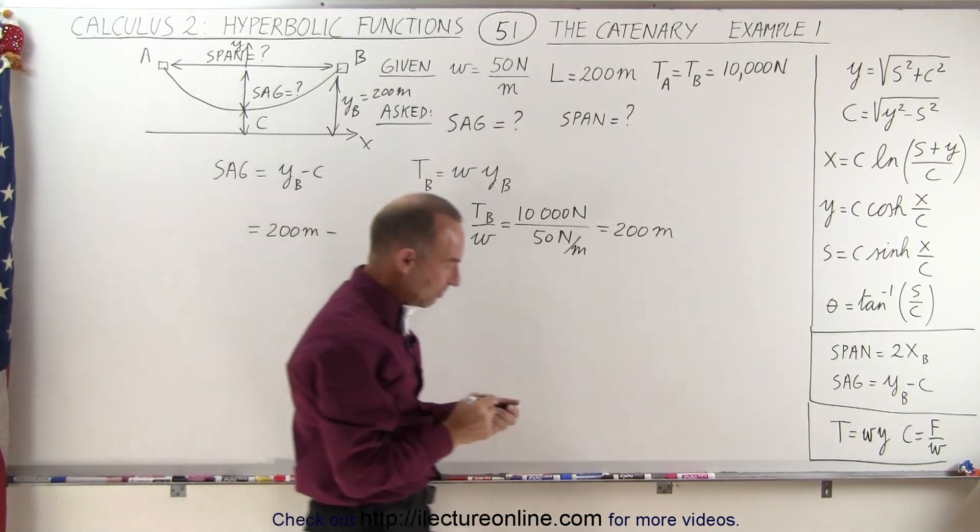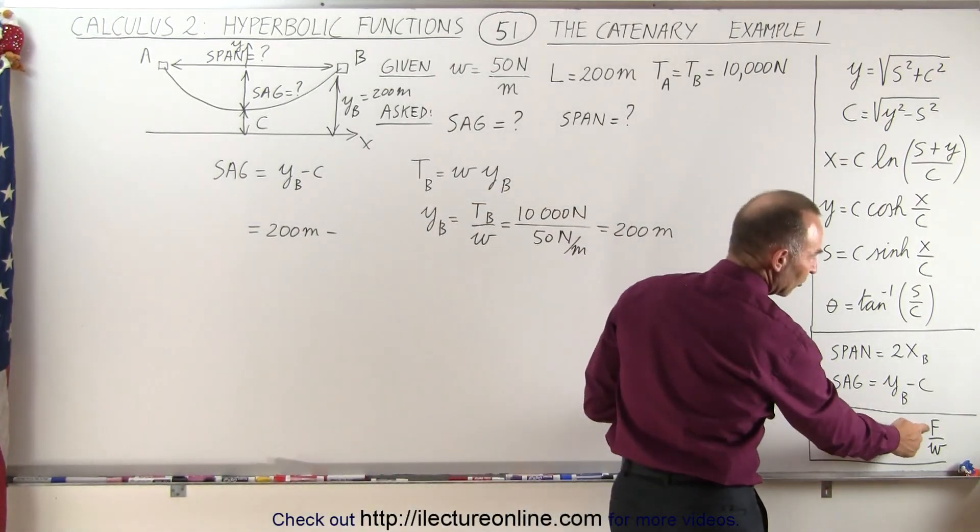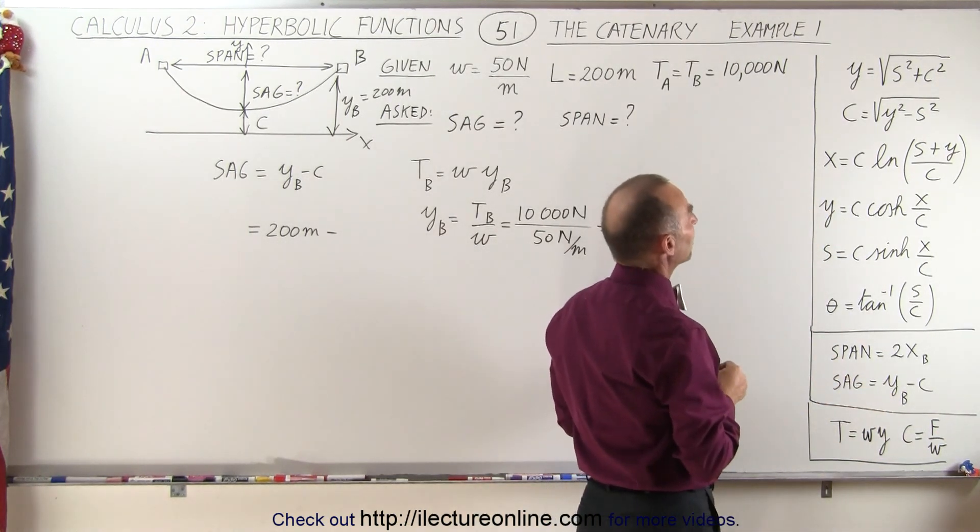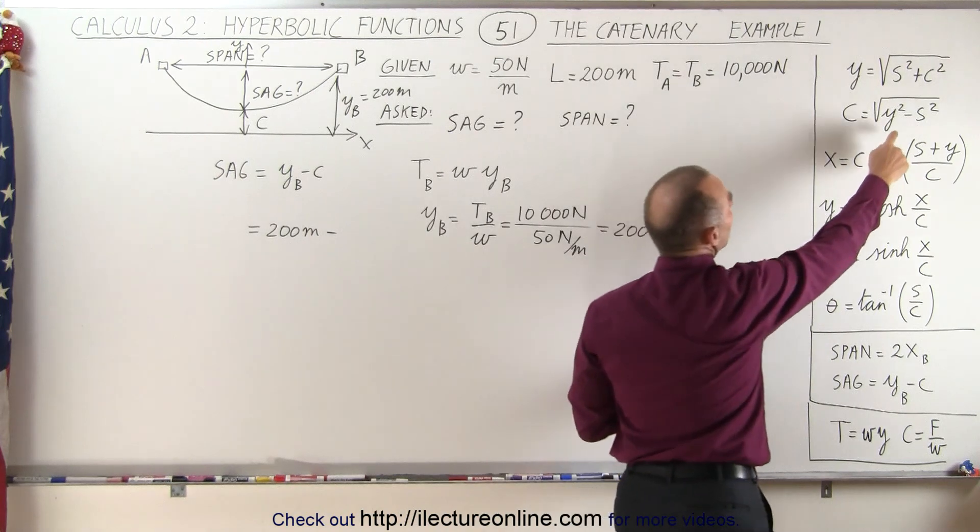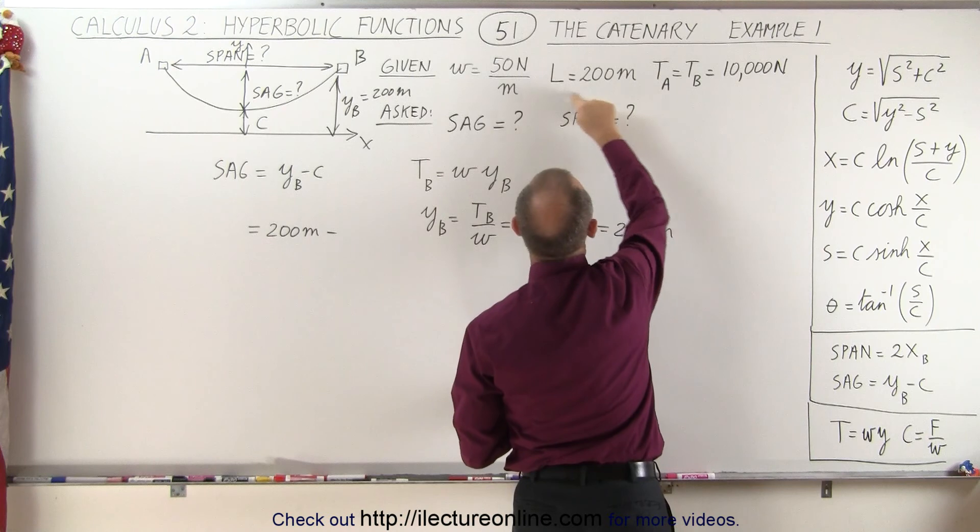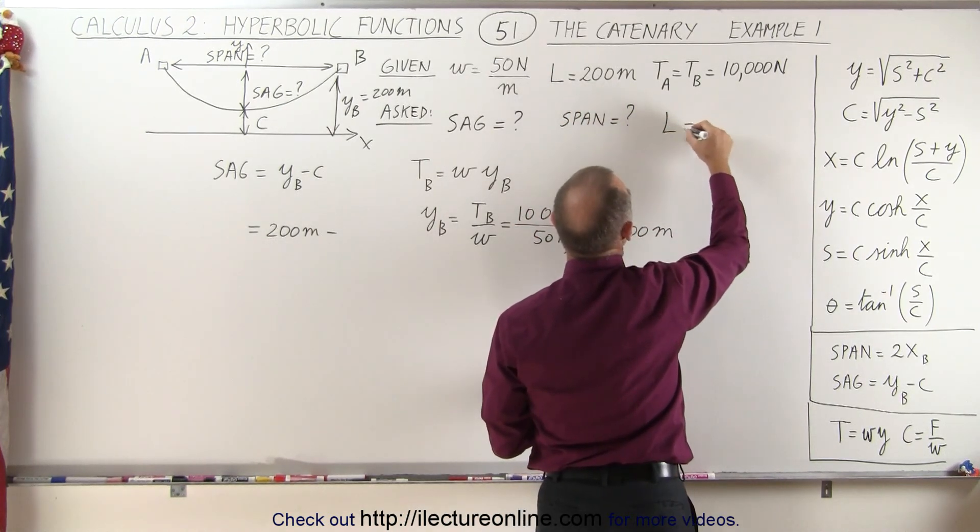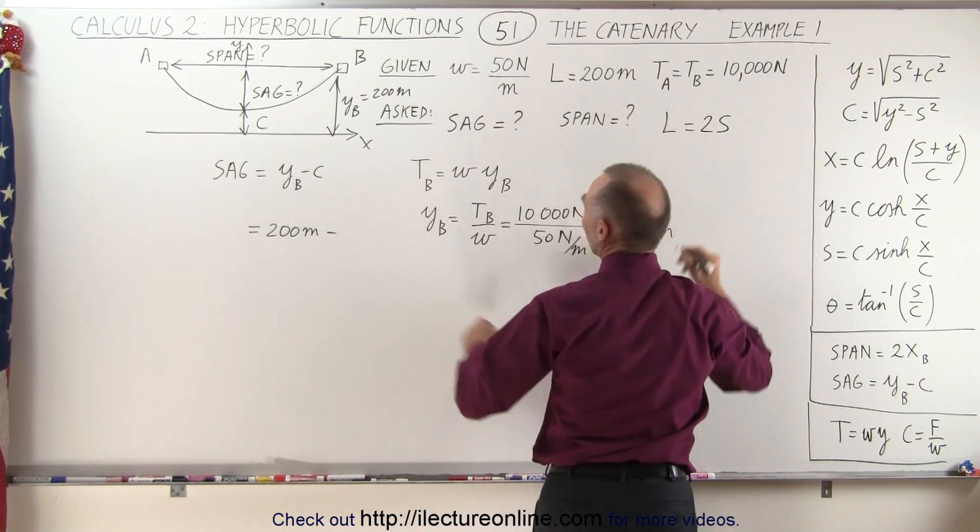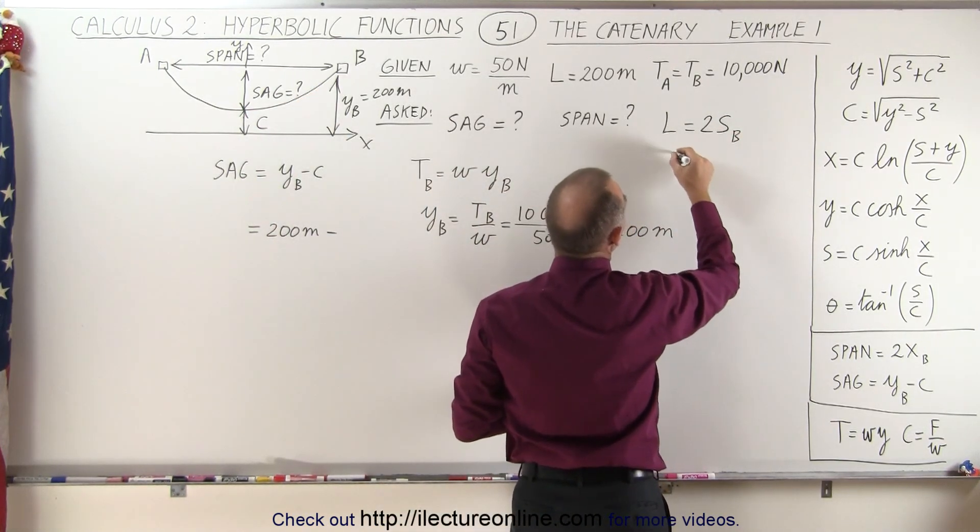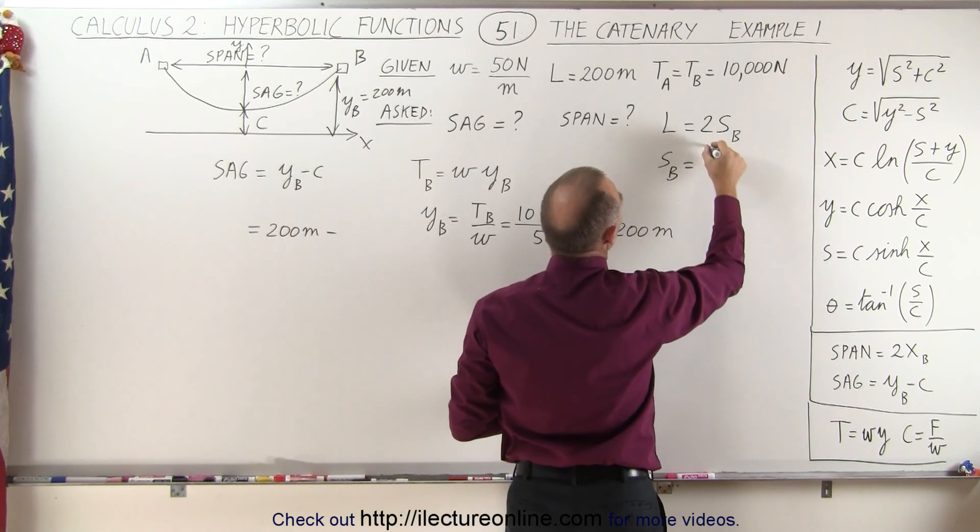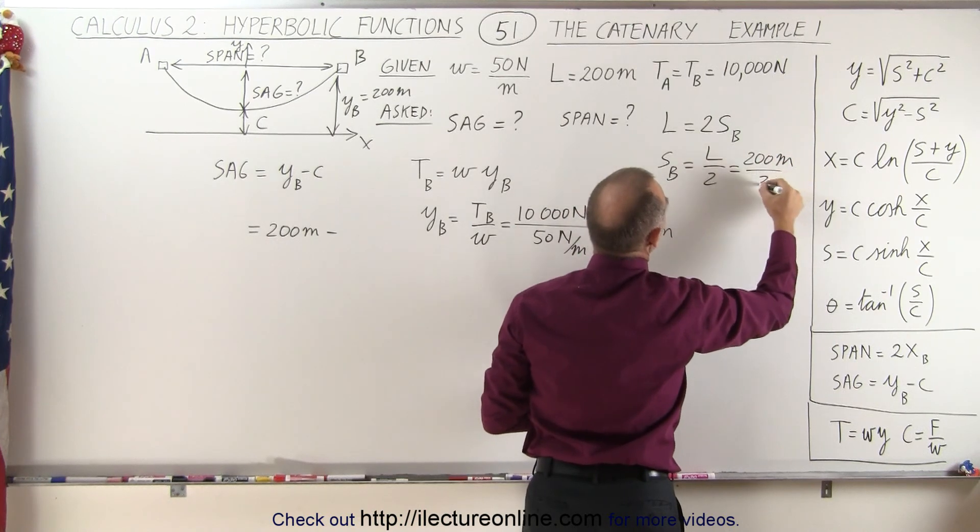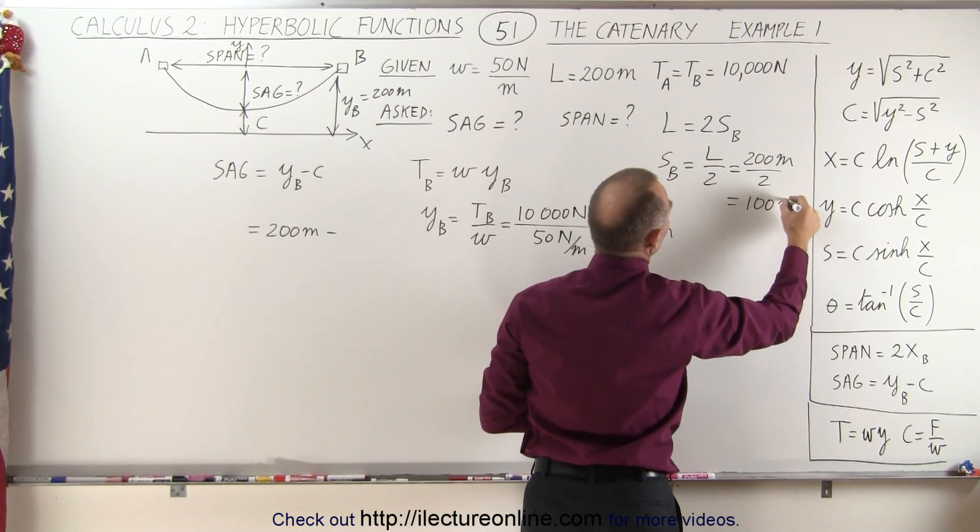Now we have to subtract C from that. Well C can be defined in various ways, if we know the tension at the bottom of the cable, we would have been able to find it using that, but we don't know the tension at the bottom of the cable, but maybe we can use this right here. Let's see, let's come over here, we're also given the length of the cable, and we know that the length is equal to twice S, because S is only half the length of the cable, if we go all the way to B. And so we can say that S sub B is equal to the length of the cable divided by 2, which in this case is 200 meters divided by 2, which is equal to 100 meters.